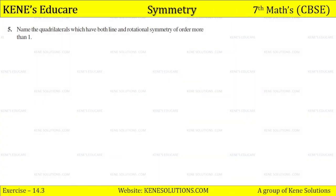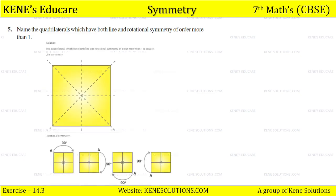Question number five: name the quadrilaterals which have both line of symmetry and rotational symmetry of order more than one. The answer is a square — it has both line symmetry and rotational symmetry of order more than one. The line of symmetry and rotational symmetry of 90 degrees can both be seen in a square.